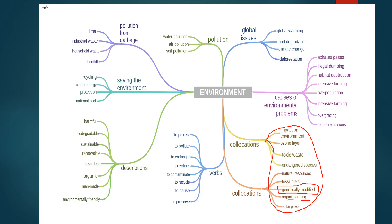Organic farming — people must avoid pesticides and chemicals used for crop growing, and instead should start doing organic farming by using natural and herbal resources. Solar power must be considered by all individuals to save our natural resources. These are some useful verbs that can be used: to protect, to pollute, to endanger, to extinct, to contaminate, to recycle, to cause, to preserve. For example: 'to contaminate water' — industries are throwing garbage to contaminate the water bodies present near them. In this way, you need to construct your sentences using these verbs and collocations.